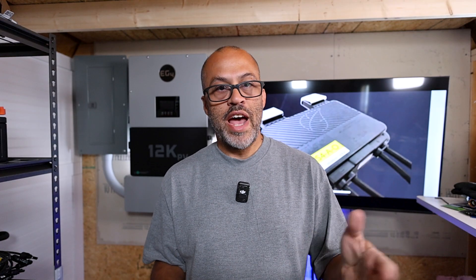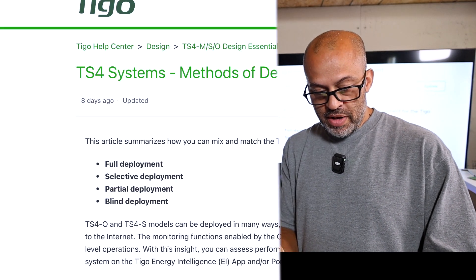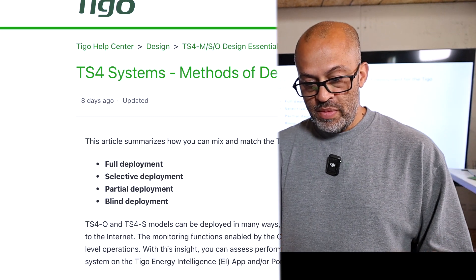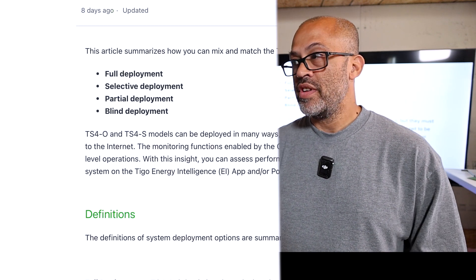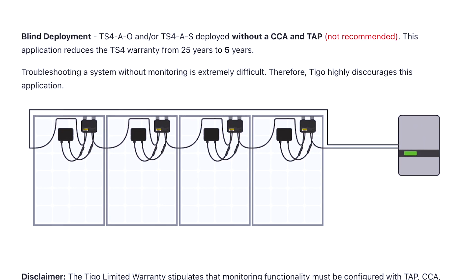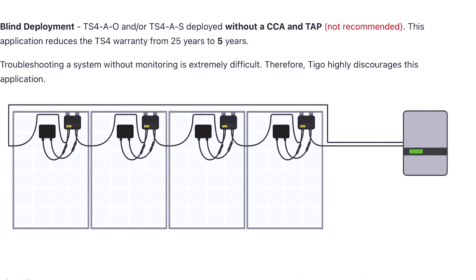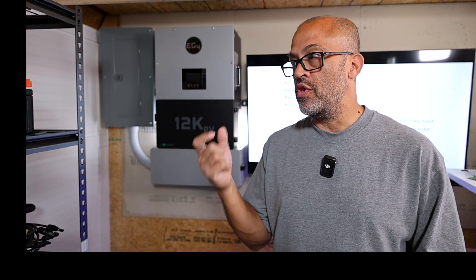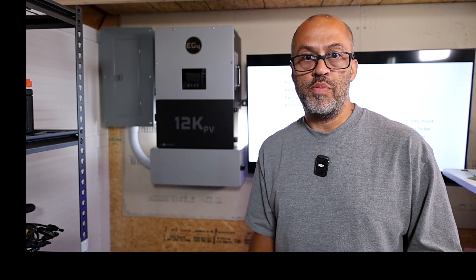I'll leave a link below to the Tigo information where I got all this from. Basically, the TS4 methods of deployment — you might not be able to see it on the screen behind me, so I'll put it up on screen. You can do full deployment, selective deployment, partial deployment, and blind deployment. Blind deployment is where you just put an optimizer on a panel without any monitoring — no CCA, no TAP — no extra stuff to connect to the internet and see what's going on.